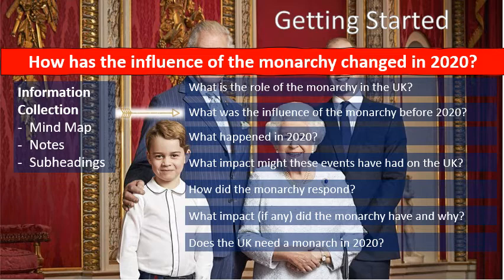You can start by looking at some of these key questions around the overall title. What is the role of the monarchy in the UK — what jobs and responsibilities do they have? What was the influence of the monarchy before 2020? What happened in 2020? What impact might these events have had on the UK? How did the monarchy respond? What impact, if any, did the monarchy have and why? And do the UK need a monarch in 2020? Collecting information around these key questions, and some of your own, will set you up for your presentation.